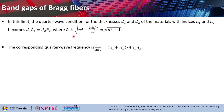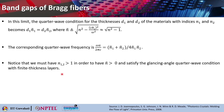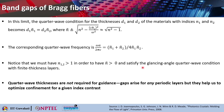This formula arises from the fact that the radial wave vector K_r in medium n can be written as K_r = √(n²(ω/c)² - k_z²). In that case the quarter wave condition would be K_r·d = π/2. The corresponding quarter wave frequency ωa/2πc can be obtained as (ñ₁ + ñ₂) / (4ñ₁ñ₂). We must have n₁, n₂ greater than 1 in order to have this parameter positive and to satisfy the glancing angle quarter wave condition with finite thickness layers. Quarter wave thicknesses are not basically required for guidance — the gaps arise from any periodic layers — but they help to optimize the confinement for a given index contrast.